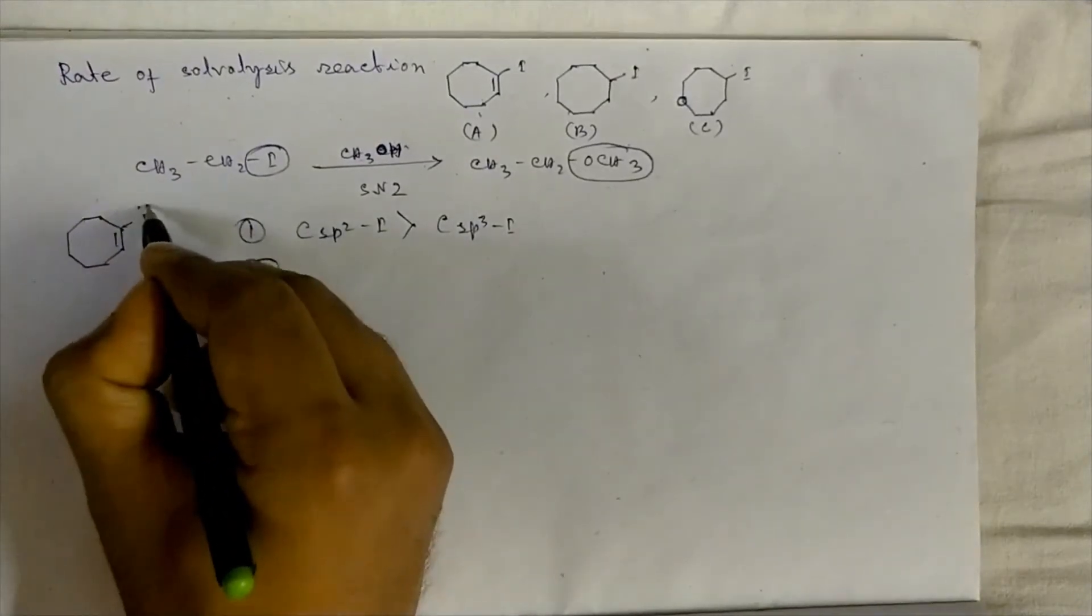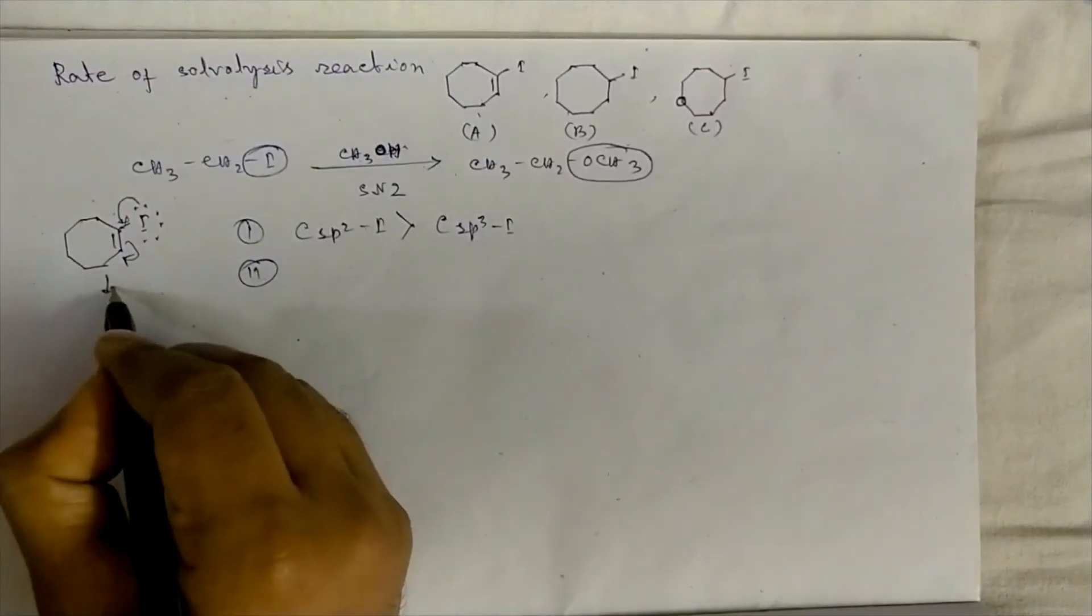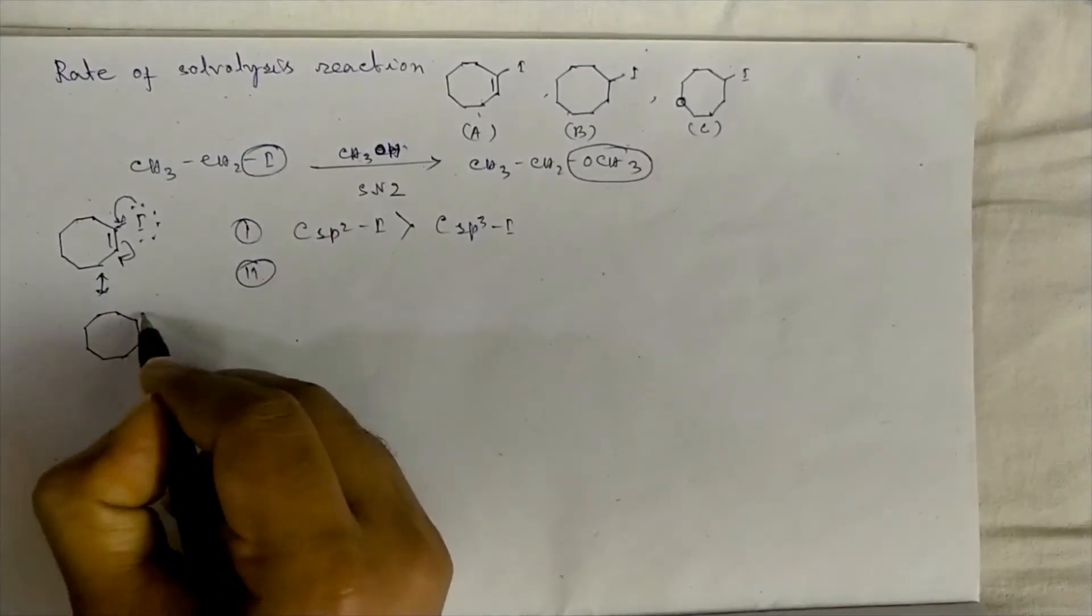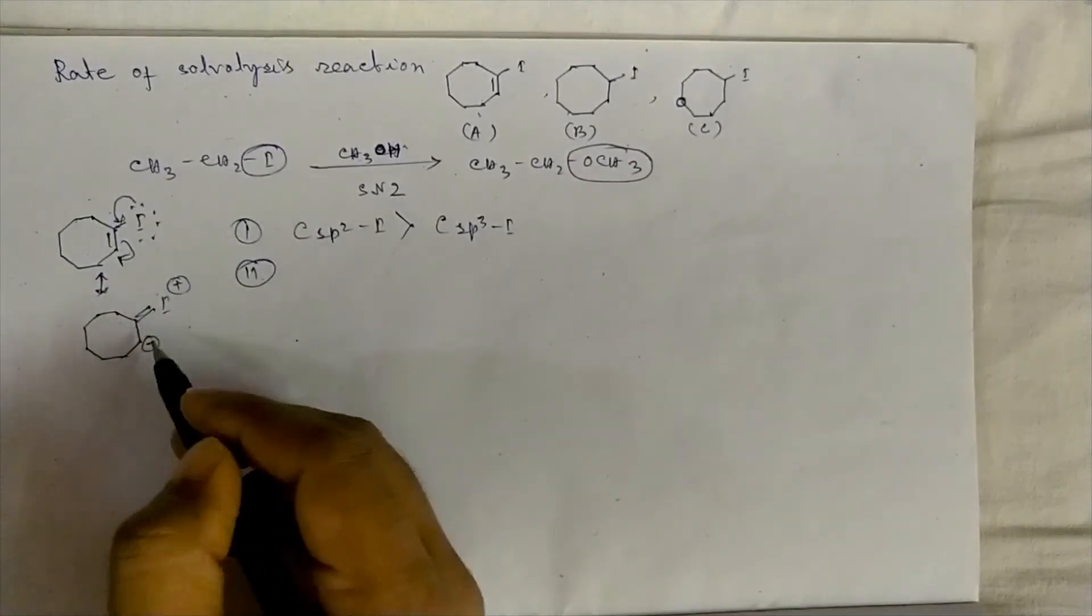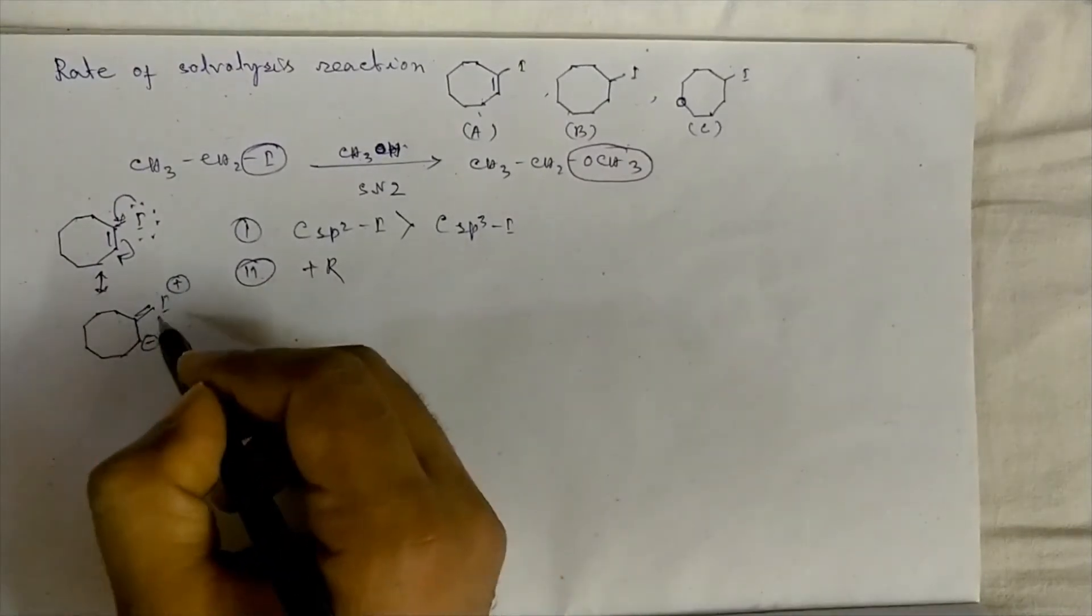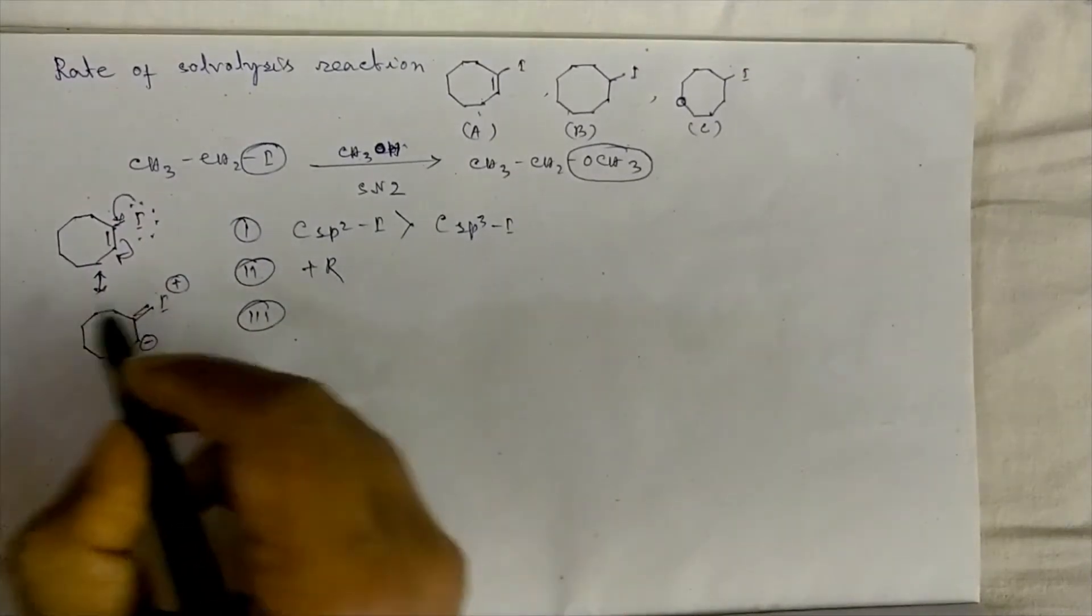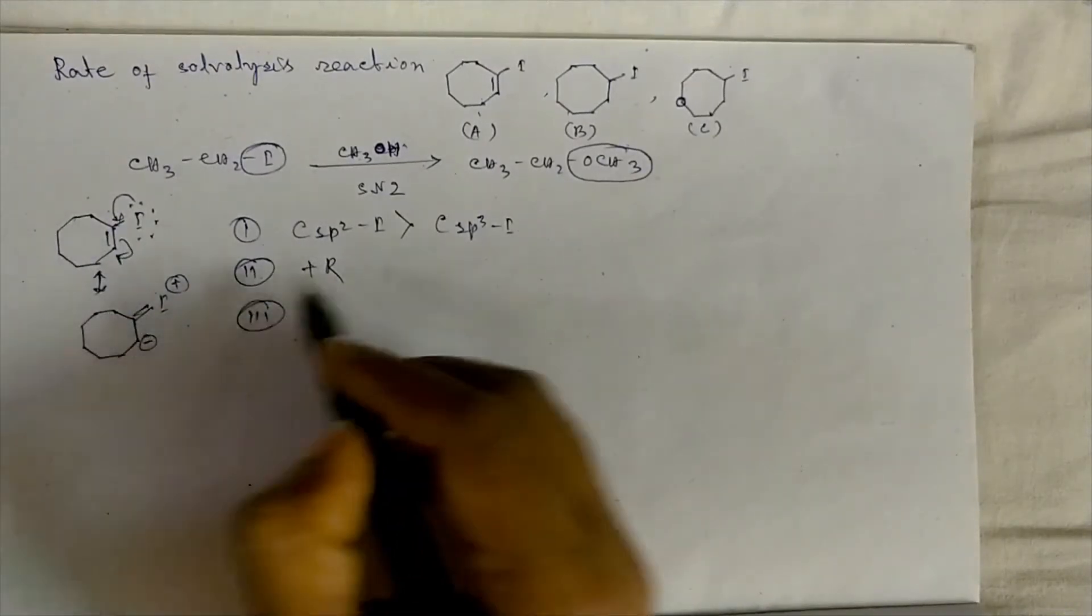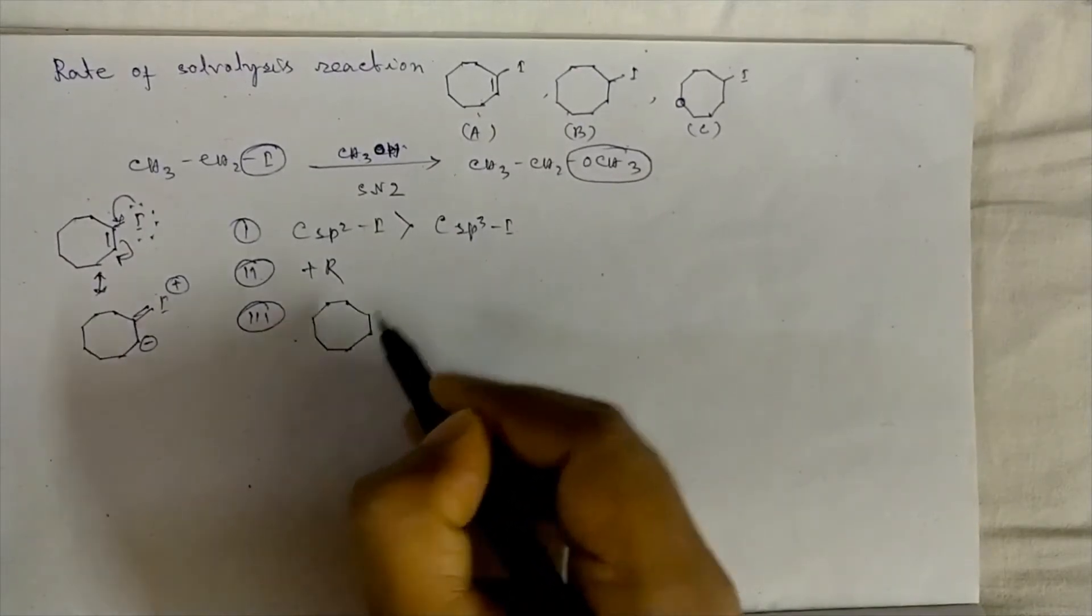the +R effect of iodine group will give some double bond character to this C-I bond, so it will resist the departure of leaving group. And as the carbon atom is sp2 hybridized, departure of I- will produce a 2° carbocation. The positive charge will be in sp2 hybridized carbon, which is highly unstable because sp2 hybridized carbon